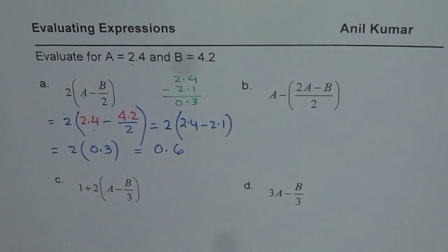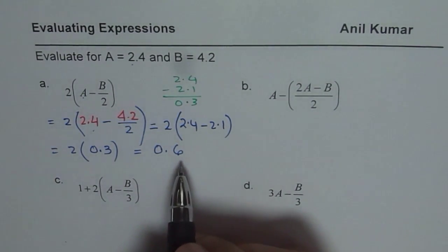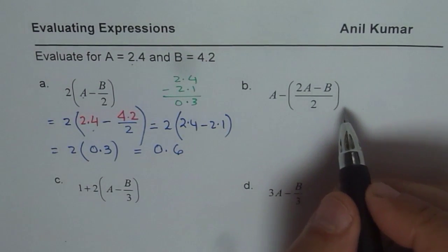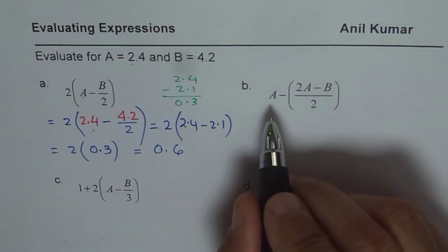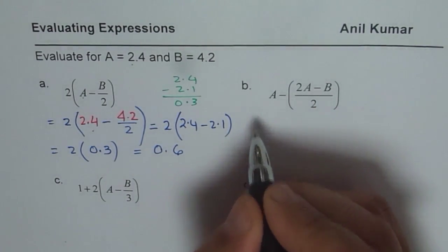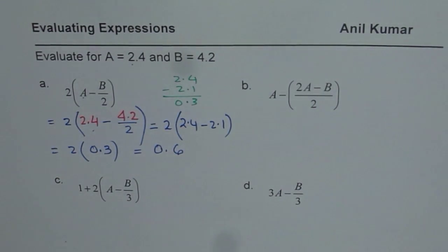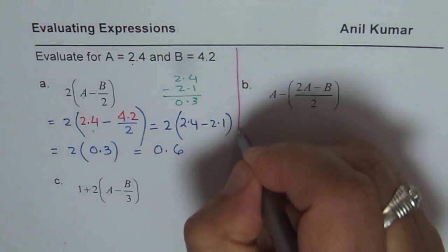So follow the steps to solve. I hope that is absolutely clear. Now let's do the next one. The first step here, like what we did, is to replace the variables with the given values. So the given values for us is A is 2.4 and B is 4.2.